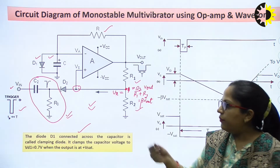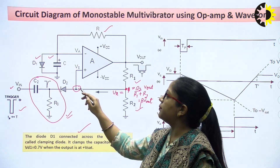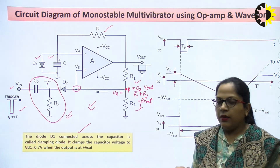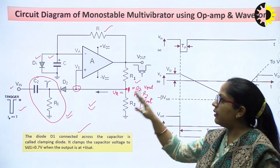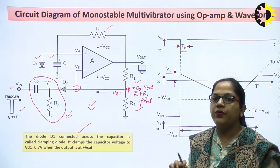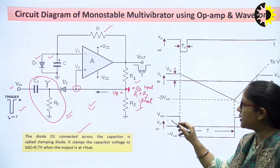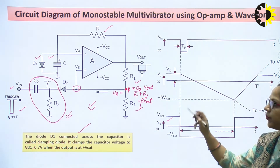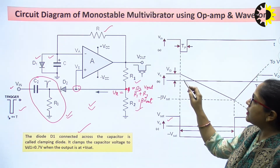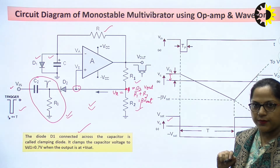The differentiator circuit ensures negative voltage is available at the non-inverting terminal when the triggering pulse is applied. Now let us understand how this circuit works. When no triggering pulse is applied, the circuit remains in its stable state. Let us consider the initial stable state is +V saturation. The output waveform shows the output is at +Vsat, and the second waveform shows the capacitor voltage clamped to the diode voltage Vd1.